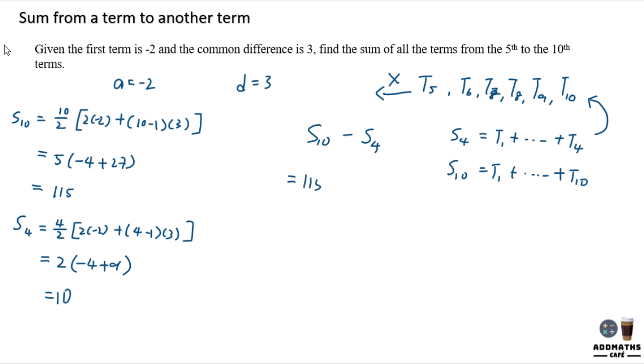So in this case, S10 is 115 minus the sum of 4 terms will be 10. And this is the answer for sum of all the terms from 5th to 10th, which is 105.